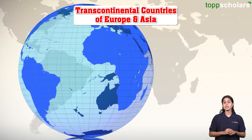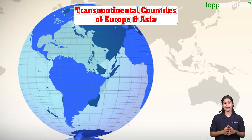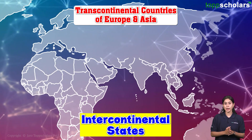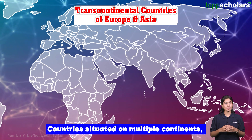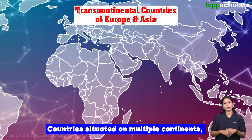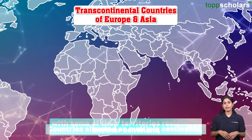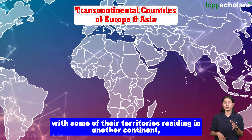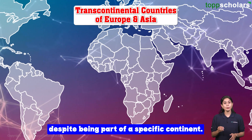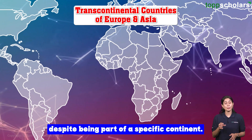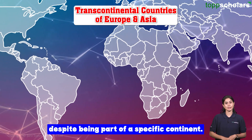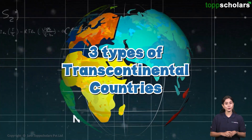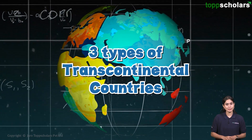Transcontinental nations, also known as intercontinental states, are countries situated on multiple continents. Some of their territories reside in another continent despite being part of a specific continent. There are three types of transcontinental countries.